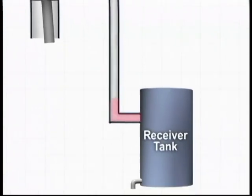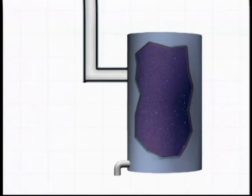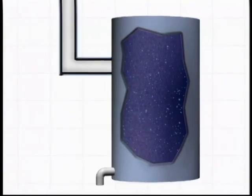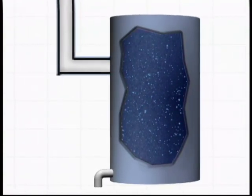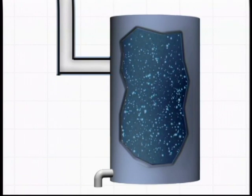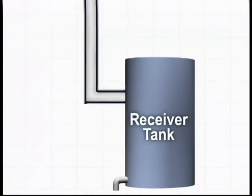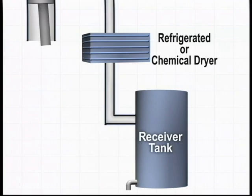However, as the air enters the receiving tank and cools down, the humidity of the air increases to 100%. As the air in the tank becomes cooler, water droplets form since humidity cannot exceed 100%. To decrease the humidity in the compressed air receiving tank, a refrigerated unit or chemical dryer can be added to remove moisture.